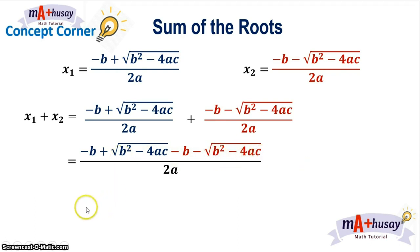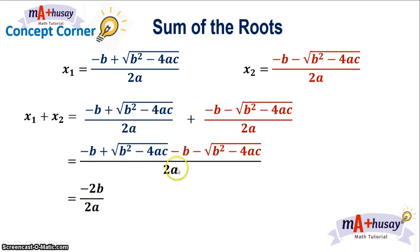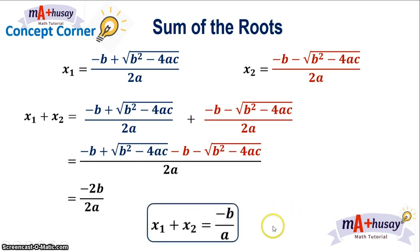Notice that we can cancel the square root of b squared minus 4ac terms. So you will have in the numerator negative 2b all over 2a, because you have negative b and negative b. When you combine, you will have negative 2b over 2a. Since we have a common factor of 2, the sum of the roots x₁ and x₂ is equal to negative b over a. So we can find the sum of the roots without solving the quadratic equation by dividing negative b by the coefficient a.